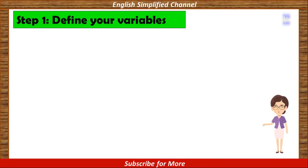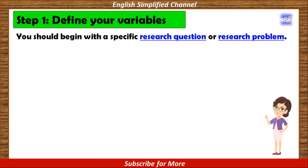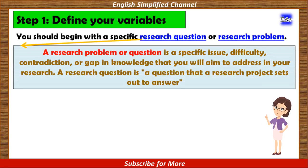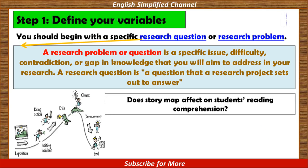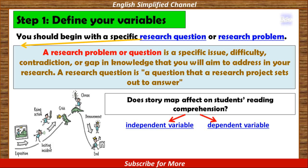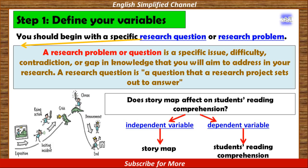In this step we focus on how you define the variables. In defining them, you should begin with a specific research question or problem — a specific issue, difficulty, contradiction, or gap in knowledge that you will aim to address. For example, I want to find out if a teaching strategy called story map will affect my students' reading comprehension, so I formulate the research question: Does story map affect students' reading comprehension? Based on this question, the independent variable is the story map, because it brings the effect, while the dependent variable is the students' reading comprehension, because that is the result I want to prove.